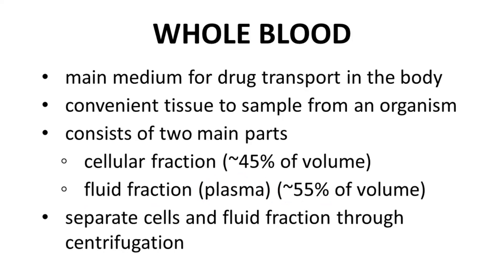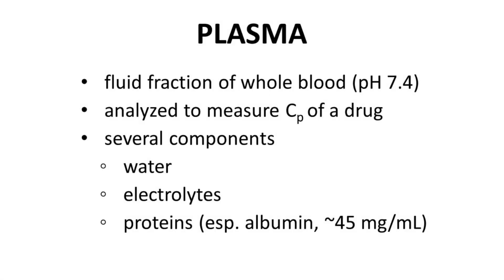The cellular fraction and plasma can be separated from each other through centrifugation. Plasma has a pH of approximately 7.4, which is considered physiological pH. Drug concentration is normally reported based on the drug concentration in the plasma, because plasma, not containing cells, is easier to analyze than whole blood.